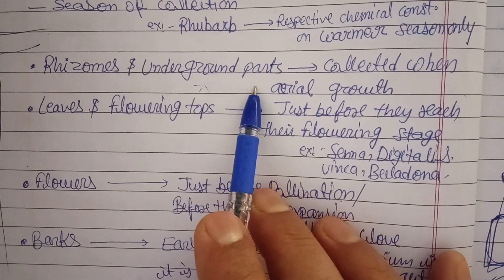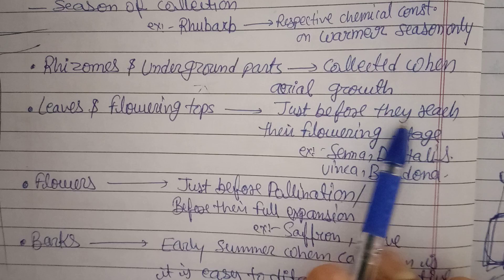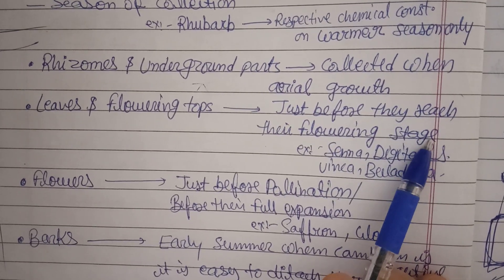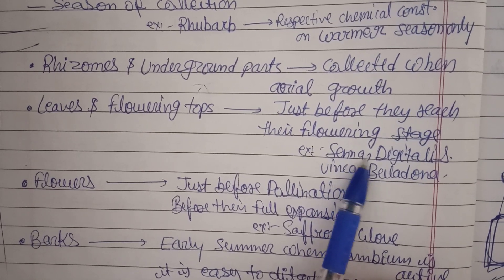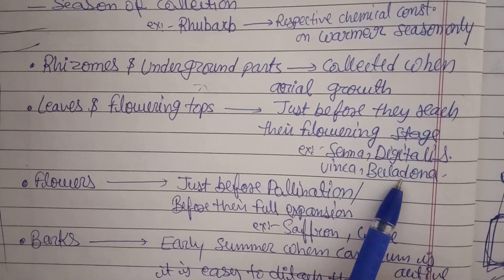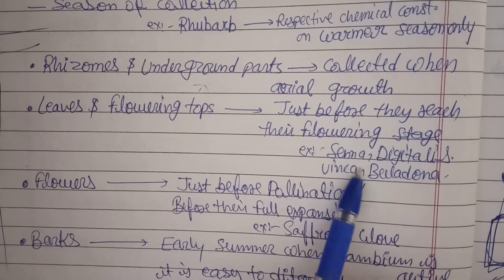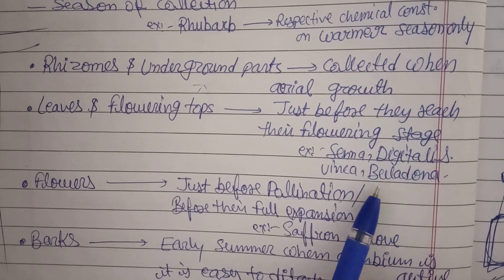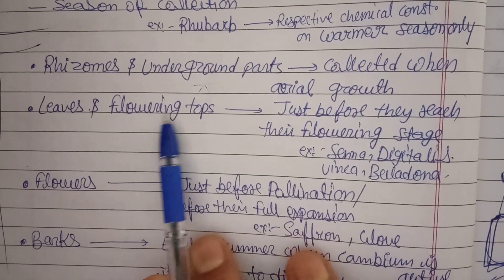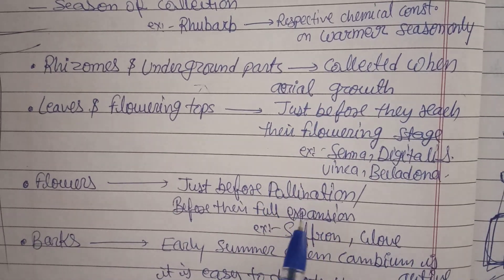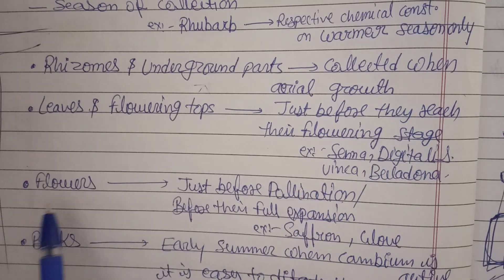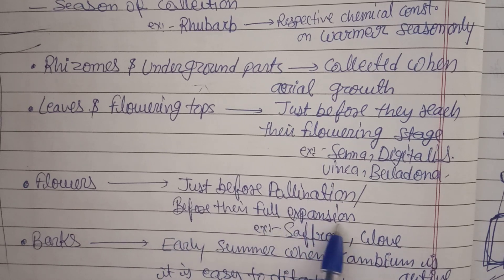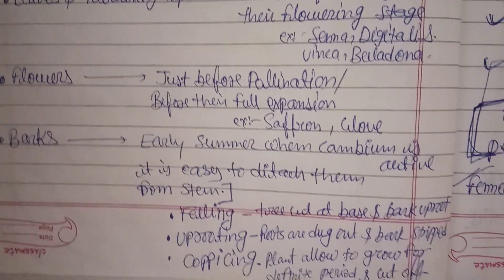Leaves and flowering tops are collected just before they reach their flowering stage, when the leaf is mature enough and contains all expected active constituents. For example: senna contains sennoside A and B, digitalis contains digitoxin, vinca contains vincristine and vinblastine, and belladonna contains atropine — all present when the plant reaches its flowering stage. Flowers like saffron and clove buds are collected just before full expansion and before pollination.